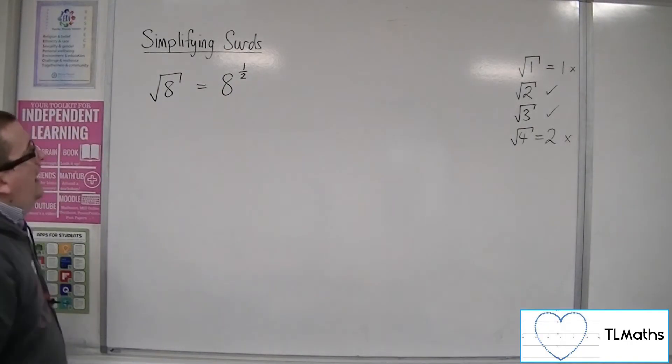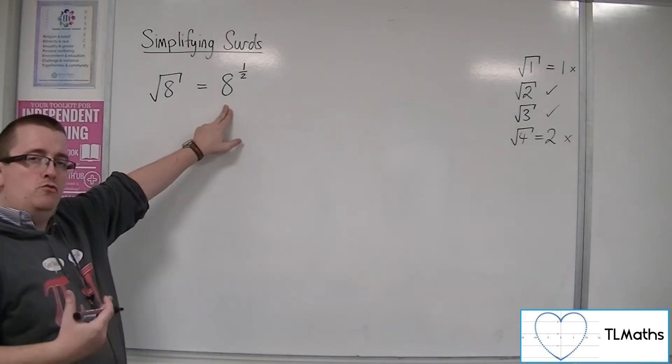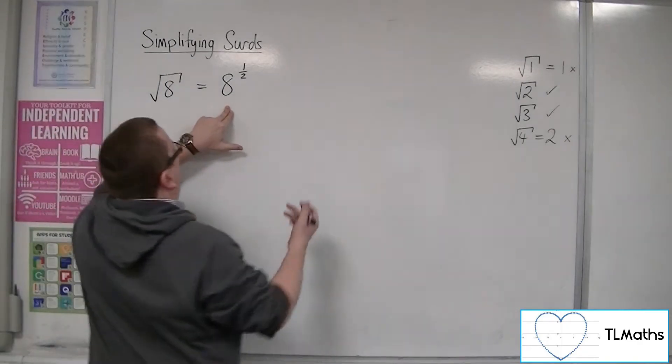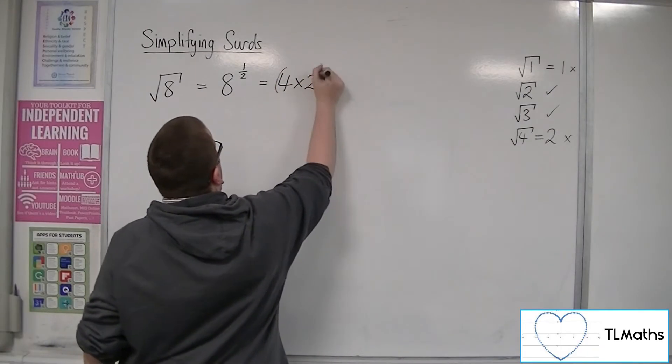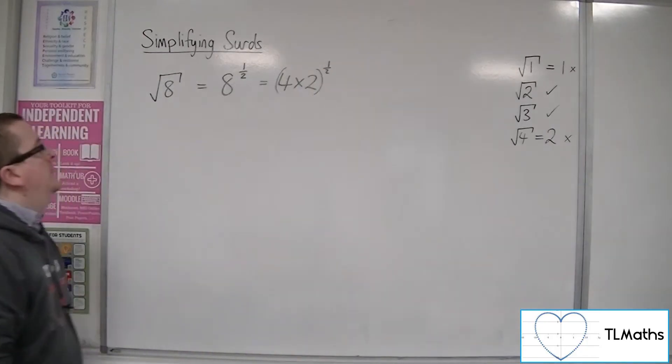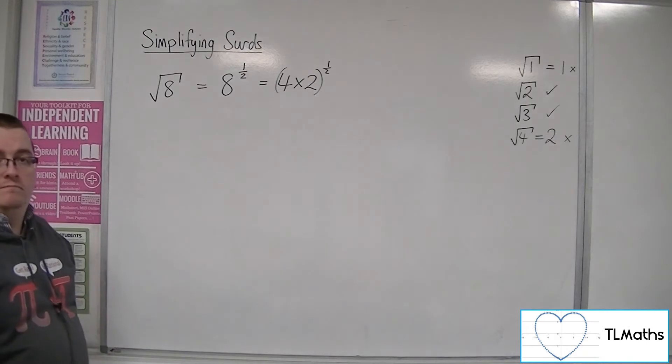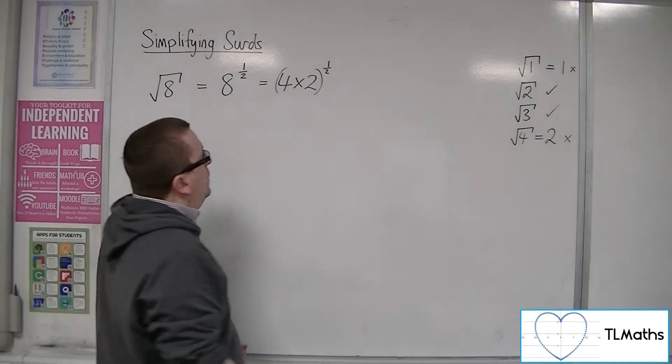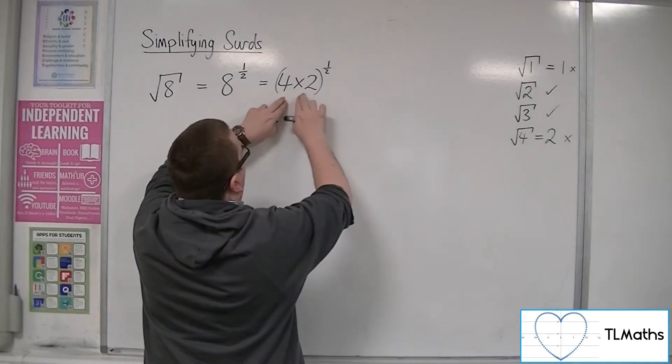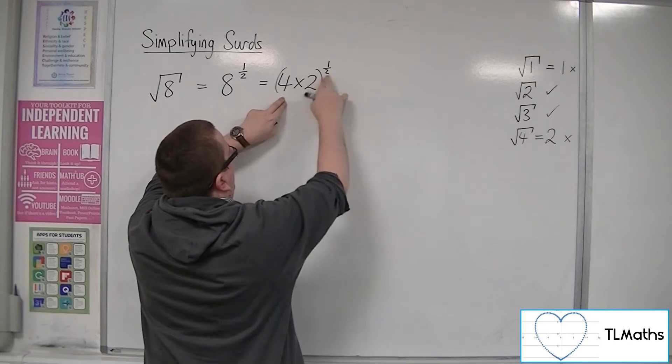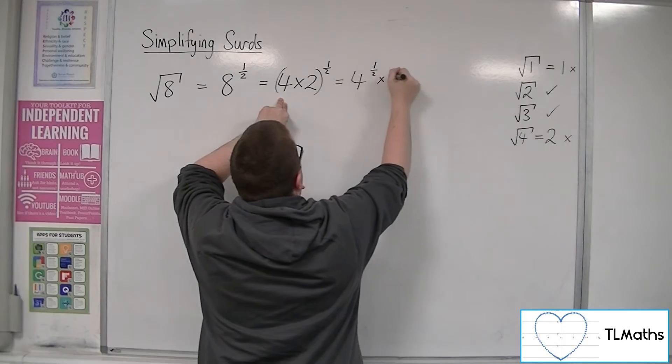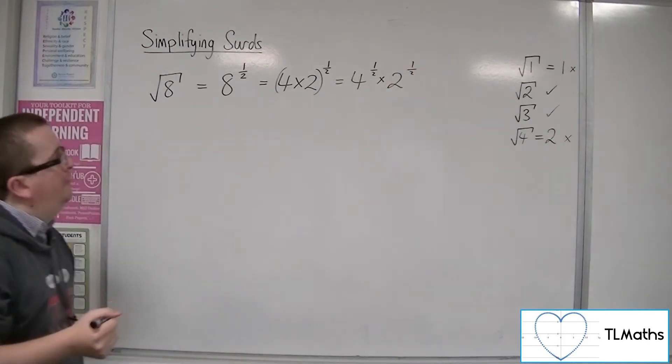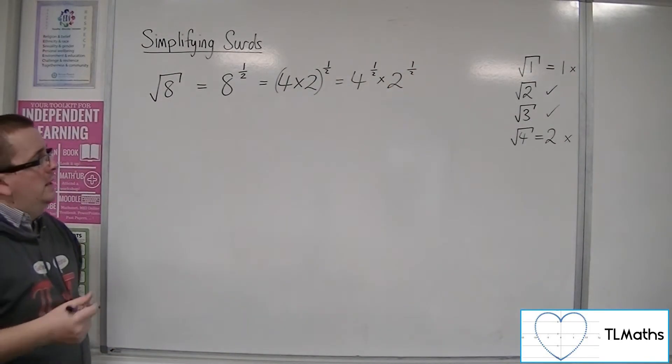And 8, you could rewrite that as 4 times 2. So that's 4 times 2 to the half. The 4 times 2 is the 8, so that makes sense. Now, when we've got two things multiplied together in a bracket to the power of a half, then we can have 4 to the half times 2 to the half. That's a perfectly valid move.